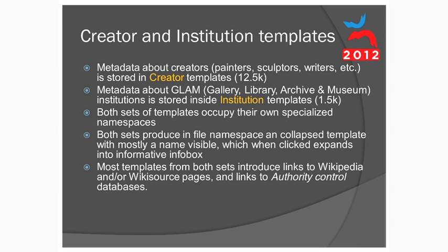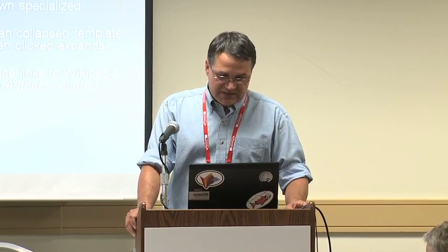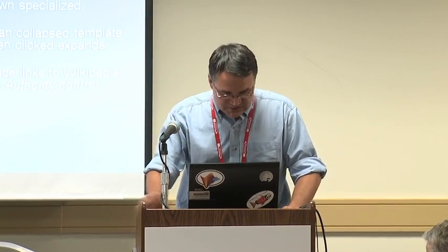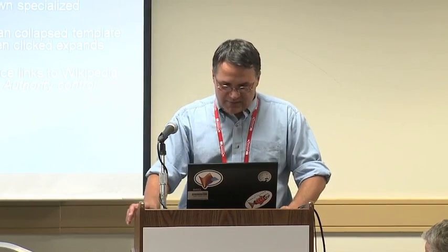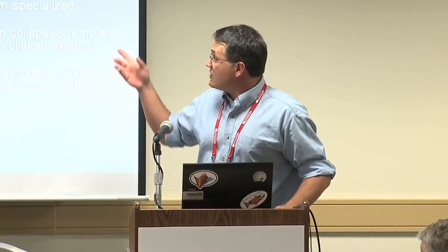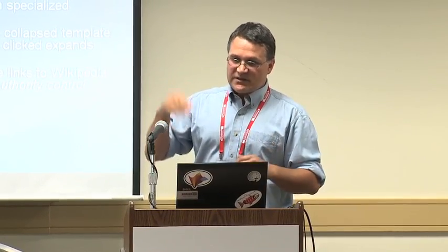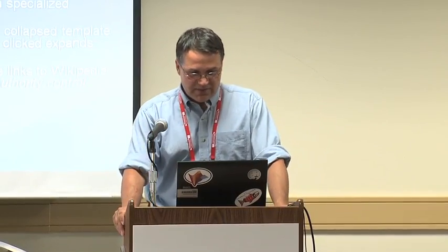Metadata about GLAM institutions — galleries, libraries, archives, museums — we store in institution templates. We have much fewer of those: about one and a half thousand. Both sets of templates occupy their own specialized namespace. In the file namespace, those templates are collapsed, but you can click on them and they'll expand to show much more information. Both also allow you to introduce authority control information — links to VIAF, the Library of Congress, or whatever institution.